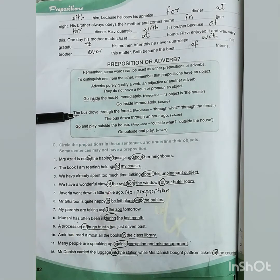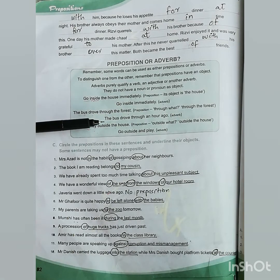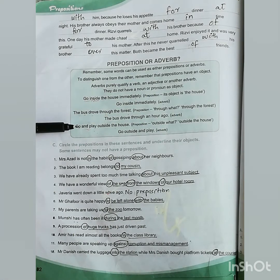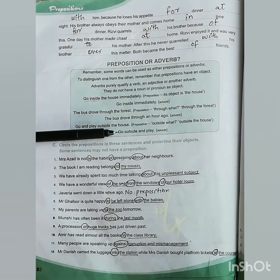'The bus drove through the forest' — here 'through' is the preposition and 'the forest' is the object. But 'The bus drove through an hour ago' — there is no object, so 'through' is working as an adverb. 'Go and play outside the house' — 'house' is the object of the preposition, so 'outside' is the preposition. 'Go outside and play' — there is no object, so 'outside' is functioning as an adverb.